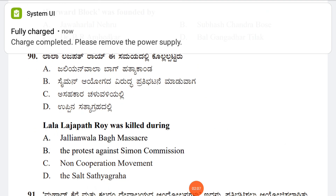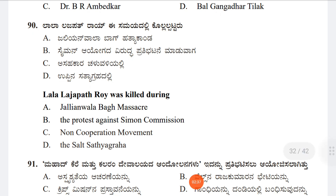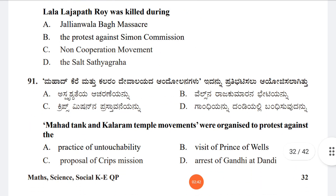Question 90: Lala Lajpat Rai was killed during Option A: Jallianwala Bagh Massacre, Option B: The protest against the Simon Commission, Option C: Non-Cooperation Movement, Option D: The Salt Satyagraha. The answer is B, the protest against the Simon Commission. He was beaten and charged by the police and died as a result.